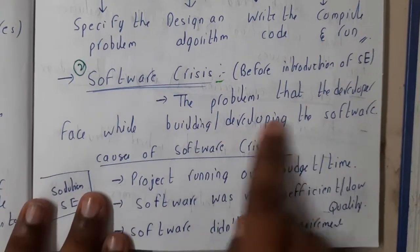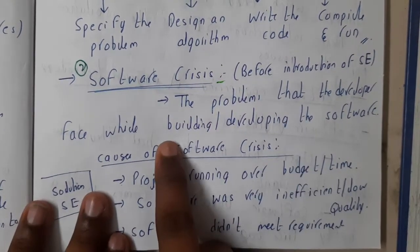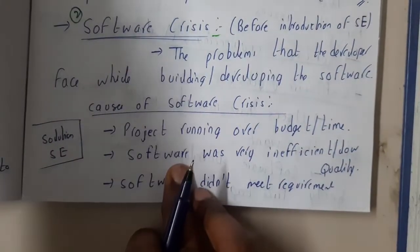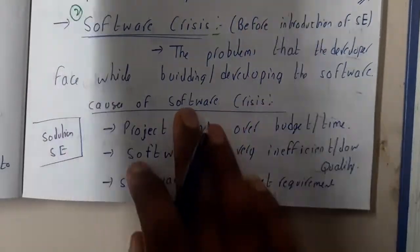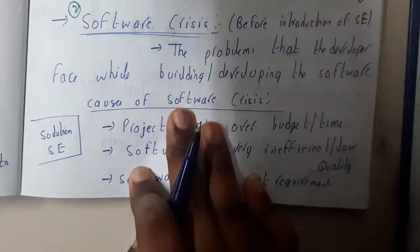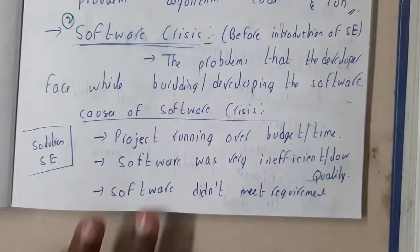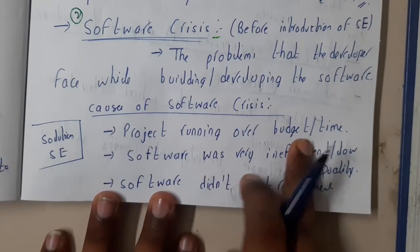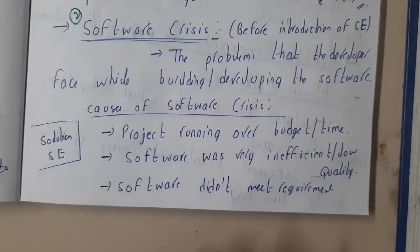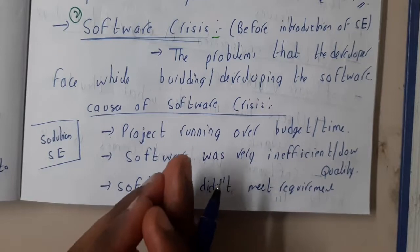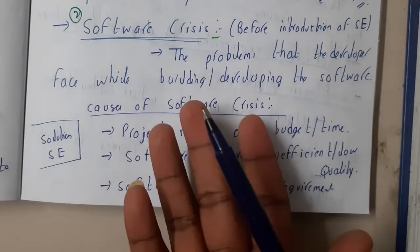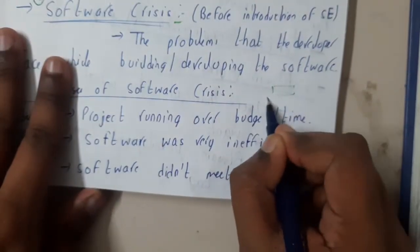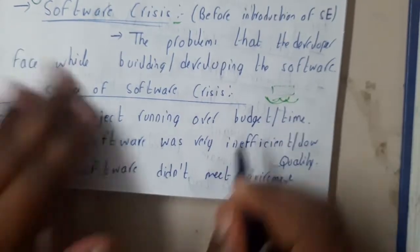These are the few problems that they faced while building the software. One of the software crisis problems is the project running over budget or time. Whenever a company accepts a project, they assign a deadline — around six months, three months, one month, or two months.